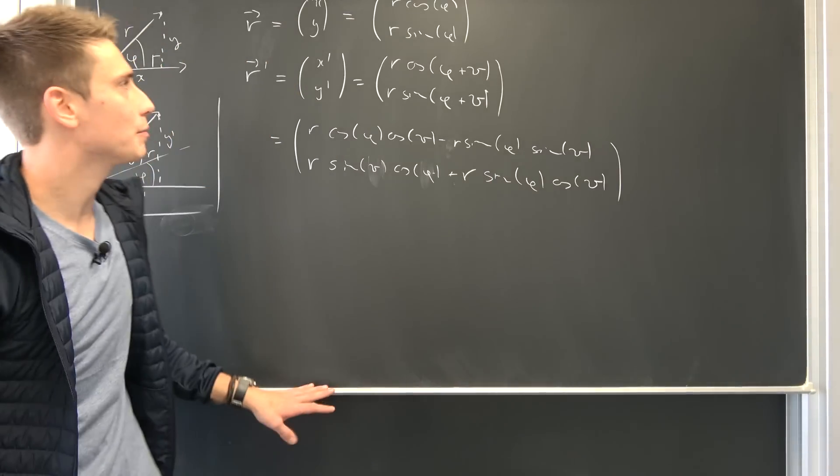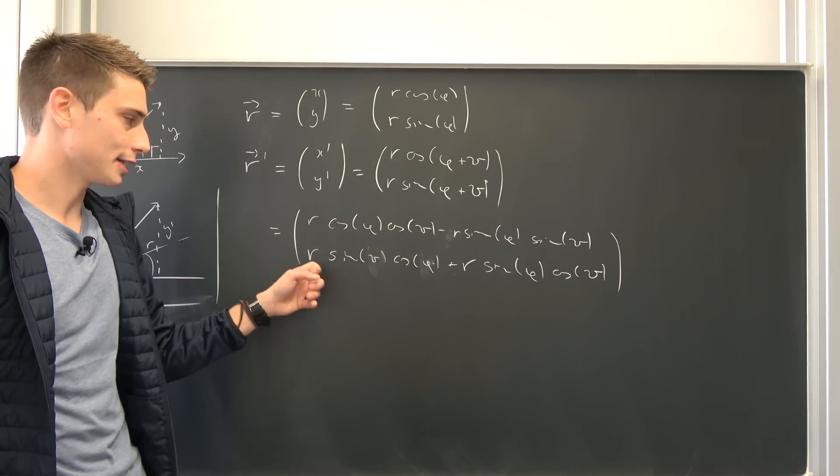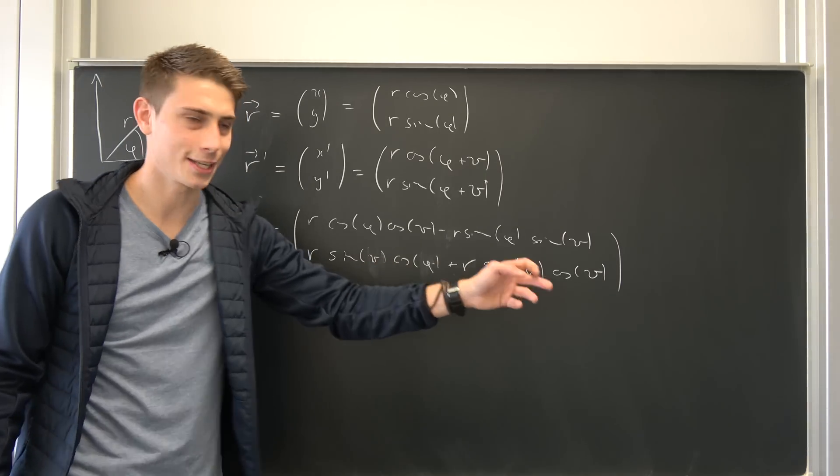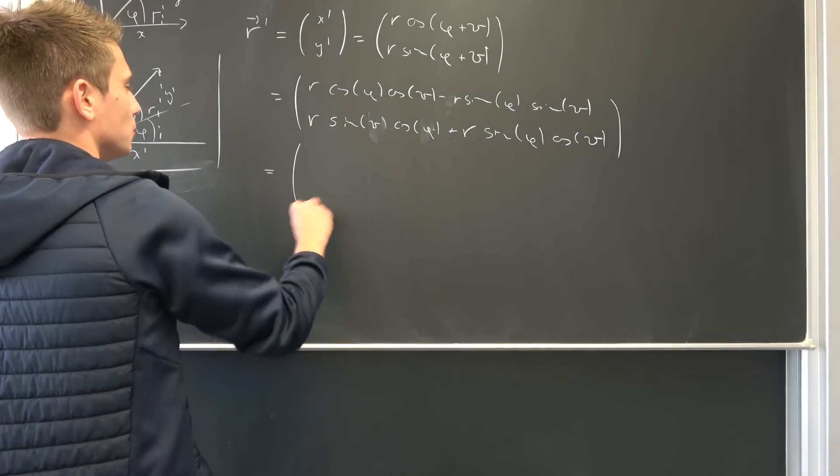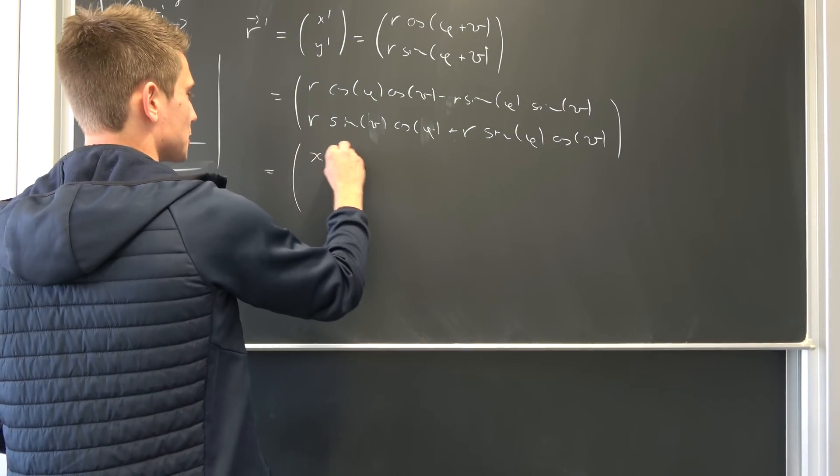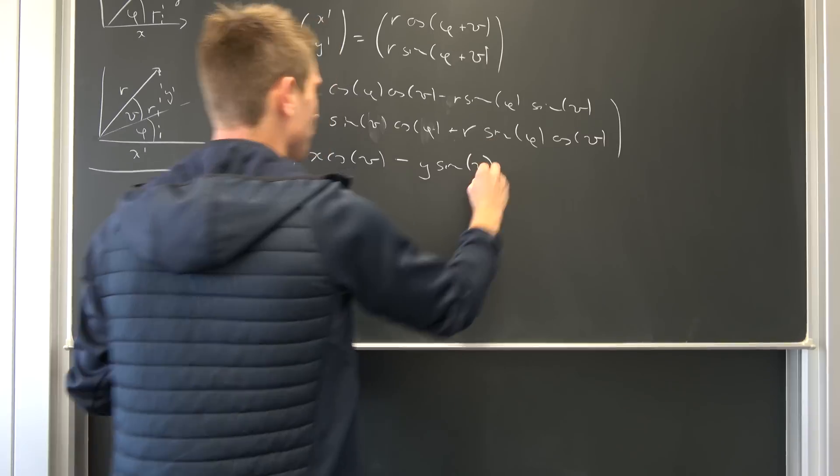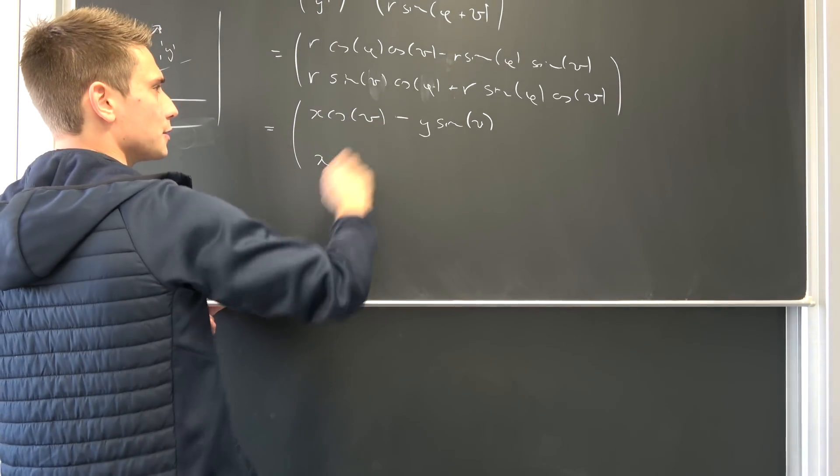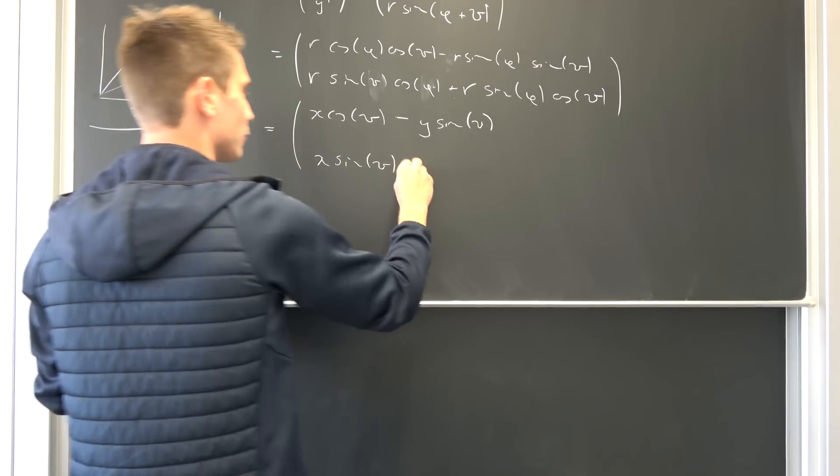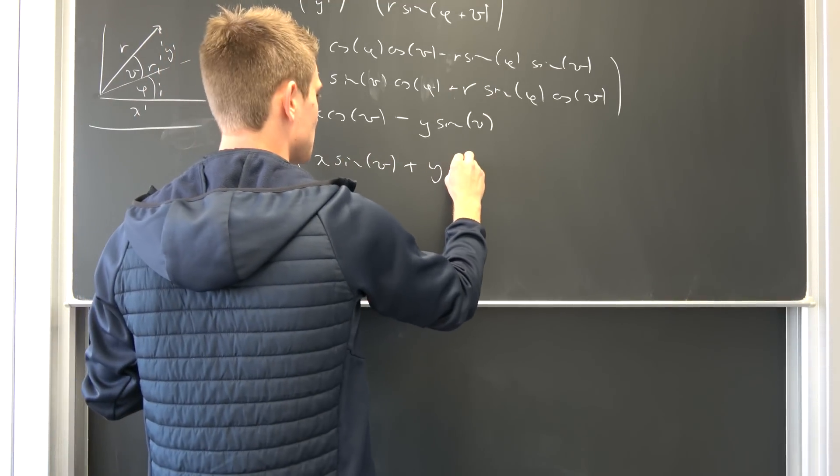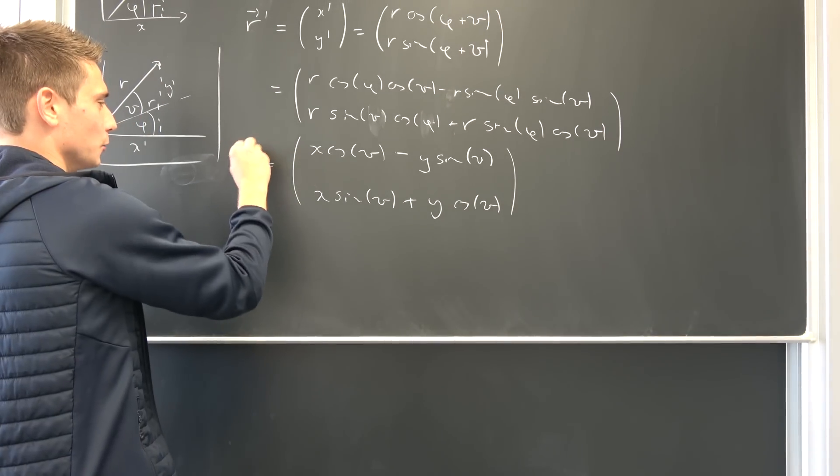And similarly we have r times sine of phi, cosine of theta. I have put them like this on purpose. You will see in a second. And here's where the magic is going to happen. You see, r times the cosine of phi and r times sine of phi corresponds to the x and y coordinate. So let's turn this into x times the cosine of theta minus y times the sine of theta, x times the sine of theta, and then we have plus y times the cosine of theta.